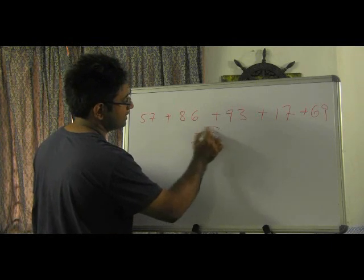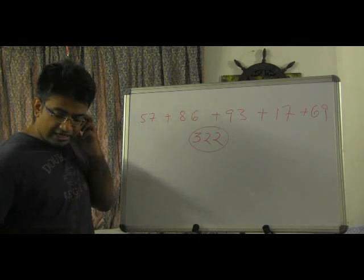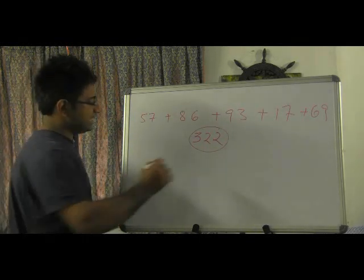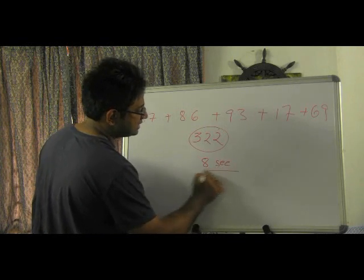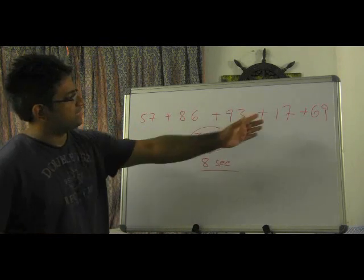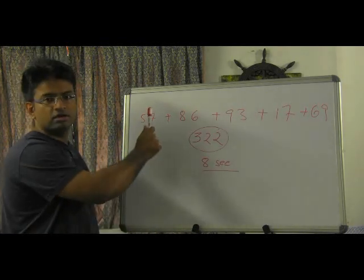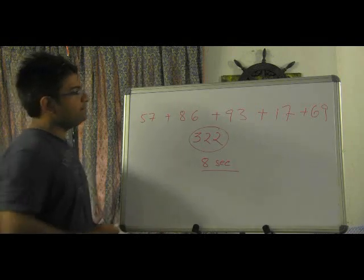Isn't it? Nicely and comfortably we have calculated this answer. How much time did I take Mr. Kittish? Eight seconds. Mr. Kittish has told me that I have taken eight seconds, which is quite a decent time. In just matter of eight seconds we could add these five two-digit numbers.